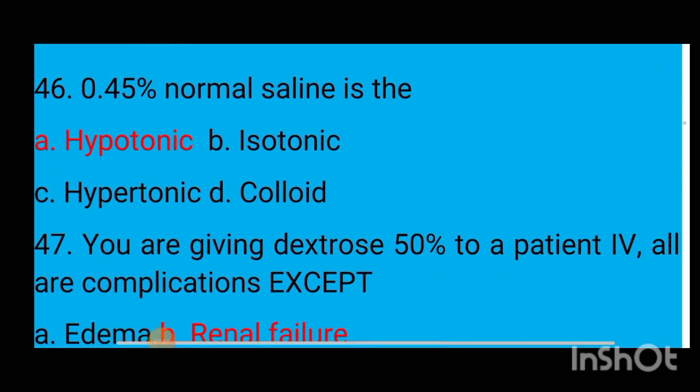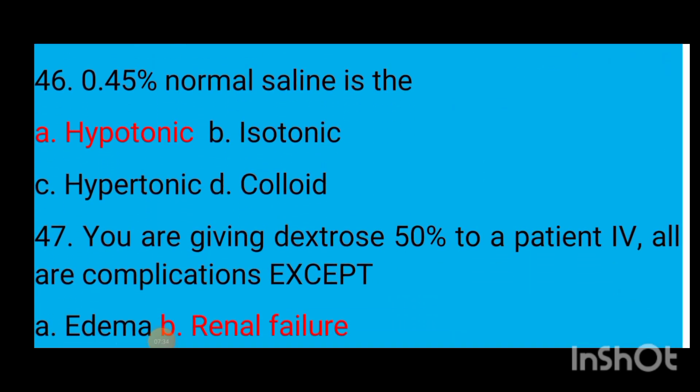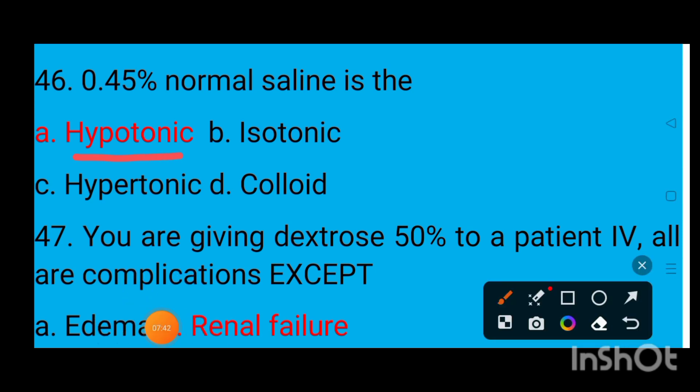Question number 46: 0.45% normal saline is — option A hypotonic, option B isotonic, option C hypertonic, option D colloid. The correct answer is option A — hypotonic saline.